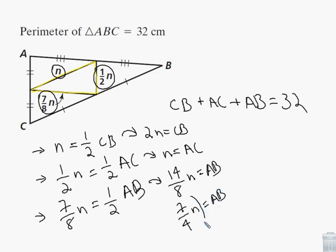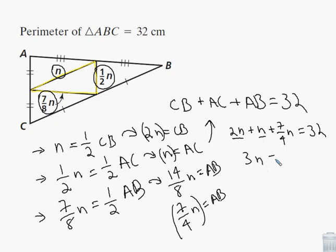Well, now we can take each of these expressions and plug them into this equation. So CB is 2n, AC is just n, and AB is seven-fourths n, and those all equal 32. So the 2n and the n combine to make 3n, so we'll just put 3n plus seven-fourths n equals 32.